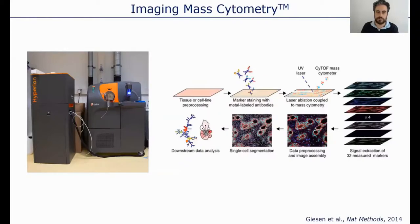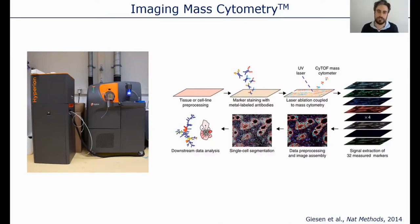We are therefore very lucky that we can make use of an imaging mass cytometry instrument, where the parallel detection of several antigens can be done simultaneously by making use of heavy metal-labeled antibodies.